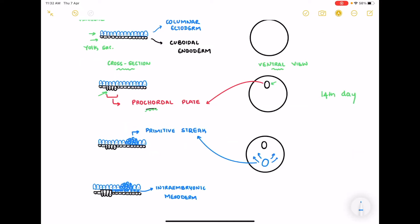Soon after the formation of the procordal plate there is formation of primitive streak where some amount of the ectodermal cells proliferates to form a bulging called the primitive streak. And this is towards the caudal end of the embryo.